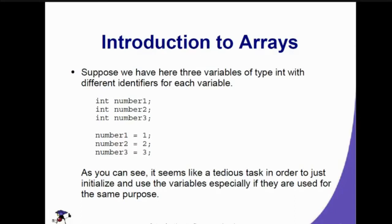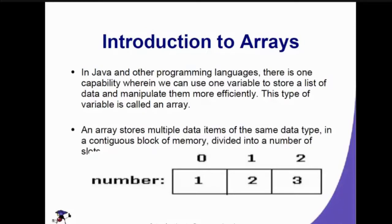Arrays are used because it seems like a tedious task to initialize and use many variables, especially if they are used for the same purpose. In Java and other programming languages, there is one capability wherein we can use one variable to store a list of data and manipulate them more efficiently. We call it an array.